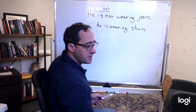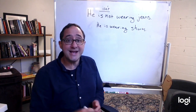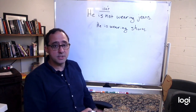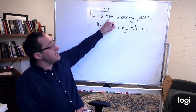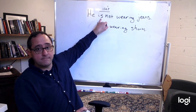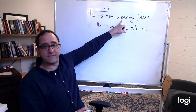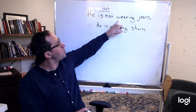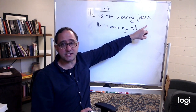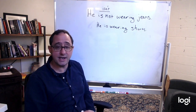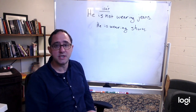Let's look today at the last part — making a negative statement. All we do is put 'not' in between the to be form and the verb with -ing. He is not wearing jeans. He is wearing shorts. He's not wearing jeans. He's wearing shorts.